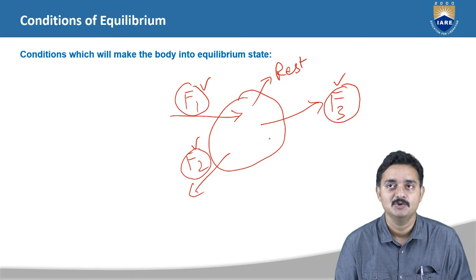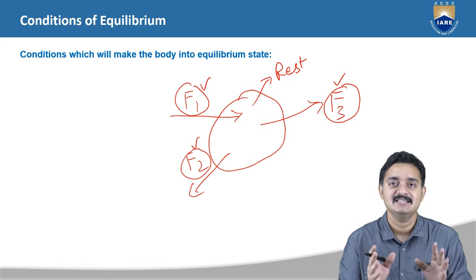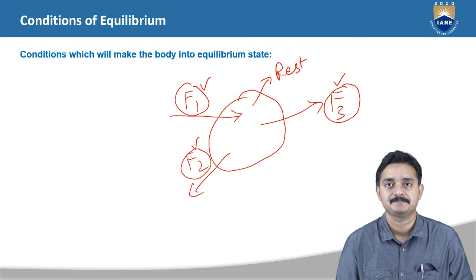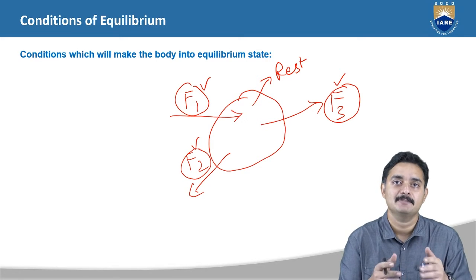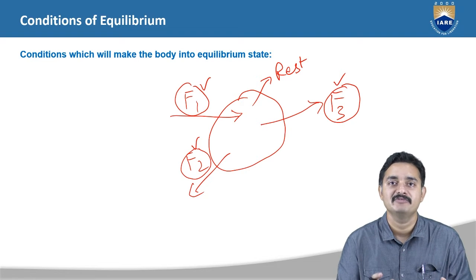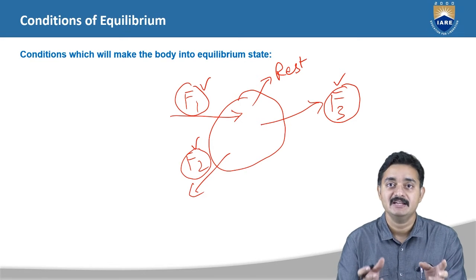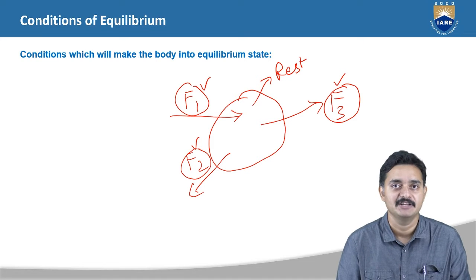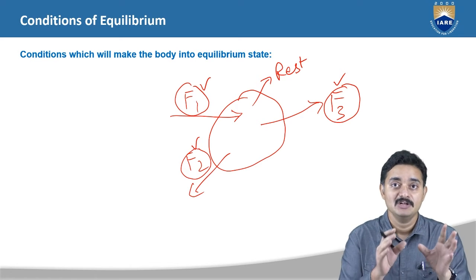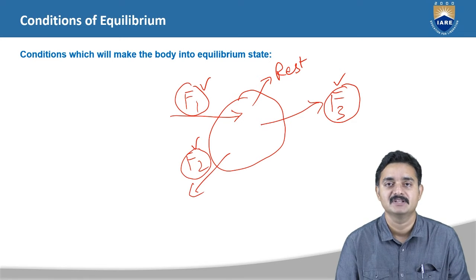For understanding this clearly, you can take the example of your dining table, where the dining table with respect to the surroundings is treated as stationary — we can say it is at rest. Even though we are placing many objects on the table like utensils or food items, the dining table is not moving anywhere. Even though five to six objects are placed on the table, with the forces of weight acting on it, the table remains stationary. So we can say that the table is in equilibrium.